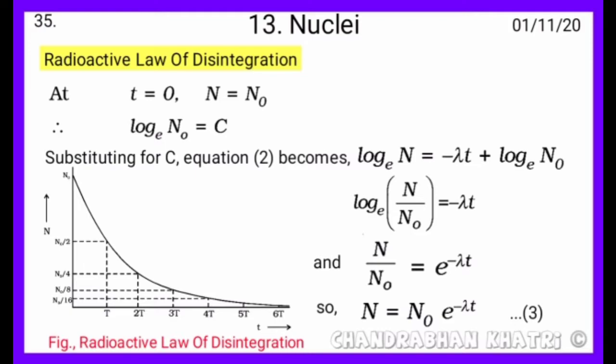Or we can write this as log N upon n naught equals minus lambda t, and N upon n naught equals e raised to power minus lambda t. So, capital N equals n naught e raised to power minus lambda t. This is equation third.